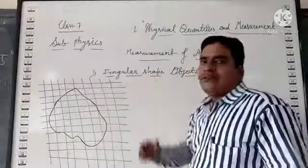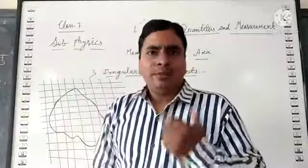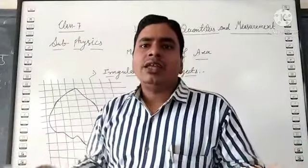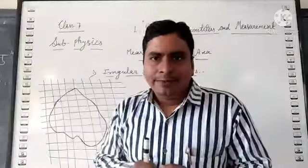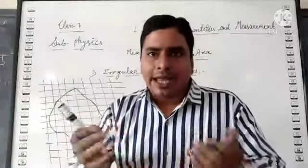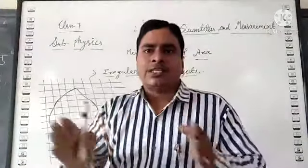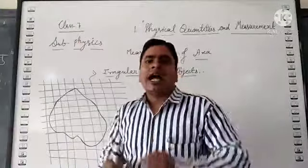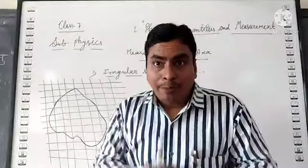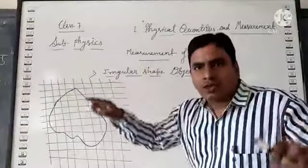Today we will discuss how to measure the area of irregular shape objects. Regular shape objects are easy to measure because their formulas are given. For square: side times side. For rectangle: length times breadth. For circle: pi r square. For triangle: one-half height times base. But how can we measure the area of an irregular solid or flat surface?